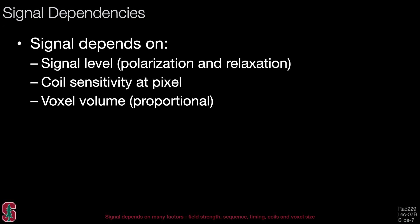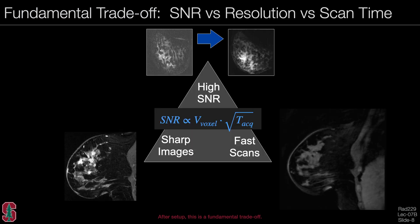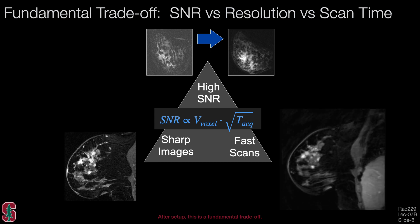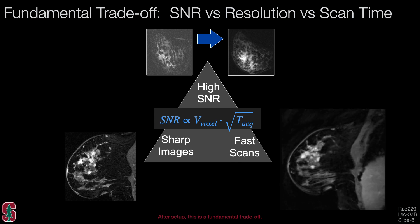Now let's look at signal dependencies. The signal depends on the signal level due to polarization and relaxation, the coil sensitivity at that pixel, and the voxel volume — it is in fact proportional to the voxel volume. There is a fundamental trade-off of SNR versus resolution versus scan time. The SNR is proportional to the voxel volume and the square root of the total A-to-D time. We are always competing between high SNR, sharp high-resolution images, and fast scans — this is a fundamental trade-off in MRI.